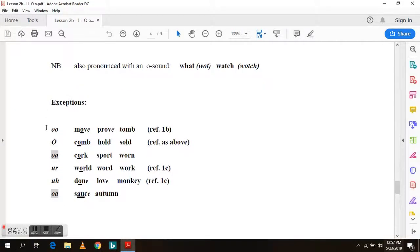And here are the exceptions. As an uh sound in move, prove, tomb. O sound in comb, hold, sold. As an or sound in cork, sport, worn. As an uh sound in world, word, work. As an uh sound in done, love, monkey. And again as a compound or in source, autumn. That's the au.